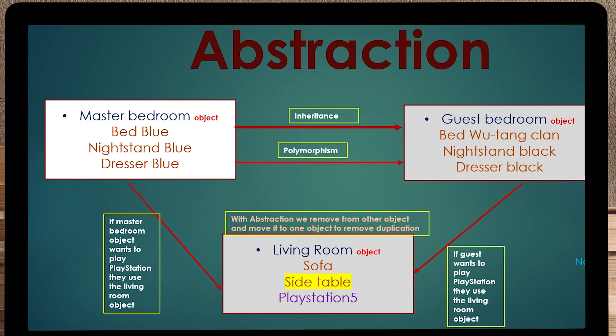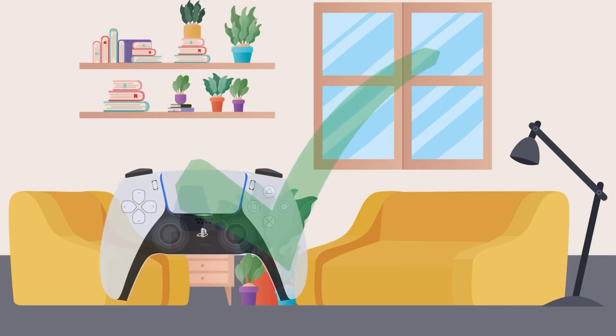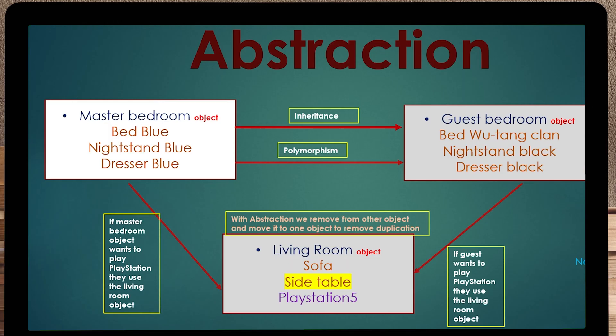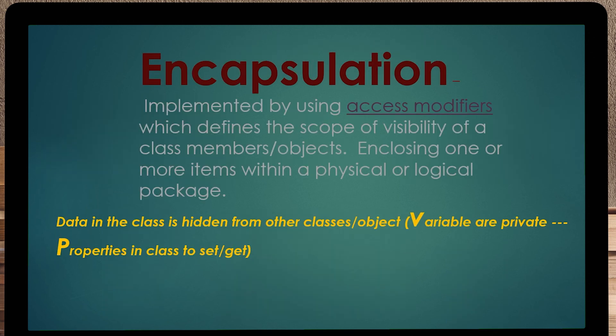With abstraction, we remove the PlayStation from the master bedroom object, remove it from the guest bedroom object, and leave it in the living room object. Any time the guest bedroom or master bedroom object needs it, they'll call the living room object. Abstraction is important because if the PlayStation were in three different objects, every time you wanted to make a change you'd have to update all three. Using abstraction, we keep it in one object. So now we've covered inheritance, polymorphism, and abstraction.